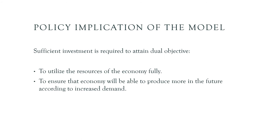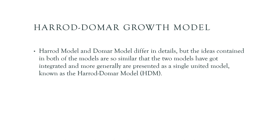The utilization ratio is the ratio between actual output and productive capacity. Productive capacity can be increased using past and present investment. Regarding Domar's policy implications, he says we have to go for sufficient investment to attain a dual objective: first, to utilize the resources of an economy fully, and second, to ensure the economy is producing more in the future in order to increase aggregate demand.